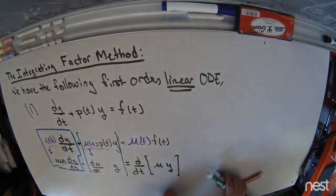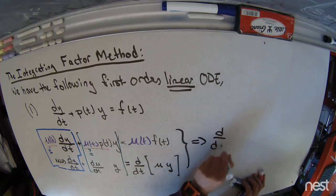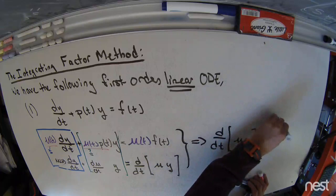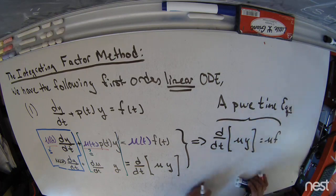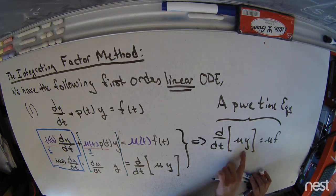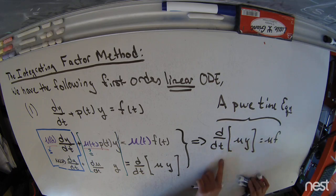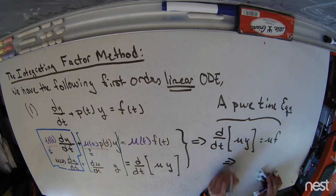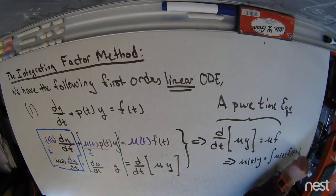If I can pull this off, the implication is that the derivative with respect to time of μ times y equals μ times f, which is a pure time equation. A pure time equation means the right-hand side has no y — only the time variable hidden inside μ and f. So if I anti-differentiate the left with respect to time, I get μ(t) times y, which equals the anti-derivative of μ(t) times f(t) with respect to time.